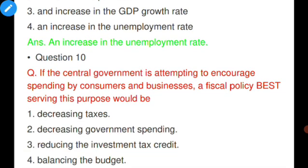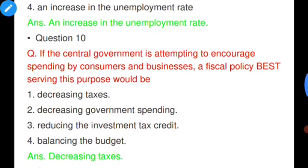Question number ten: If the central government is attempting to encourage spending by consumers and businesses, a fiscal policy best serving this purpose would be — decreasing taxes, decreasing government spending, reducing the investment tax credit, or balancing the budget. Option A is correct — decreasing taxes. When taxes decrease, disposable income increases, spending capacity increases, aggregate demand increases, which drives employment and economic growth.